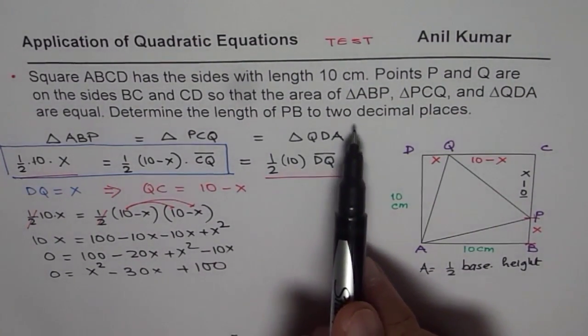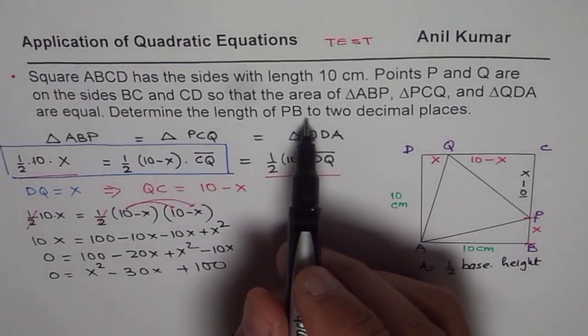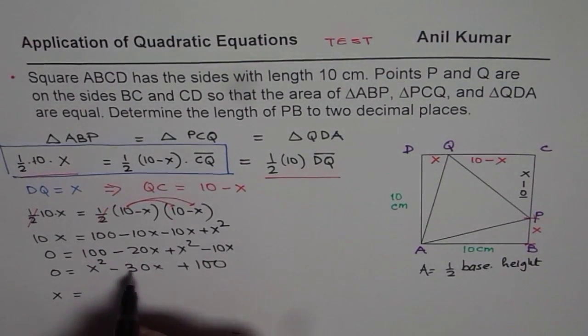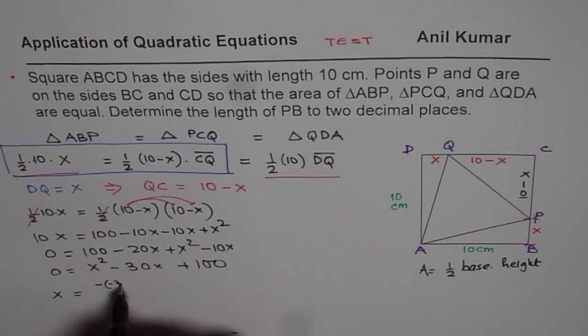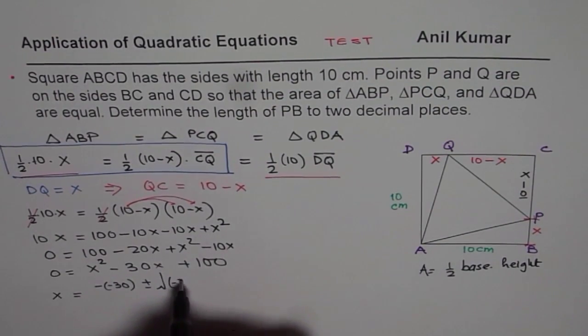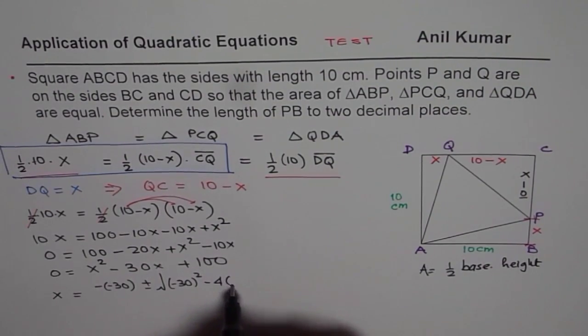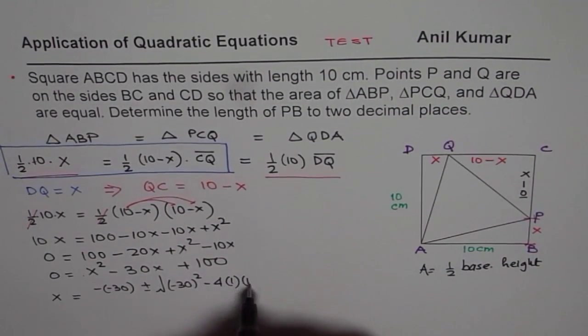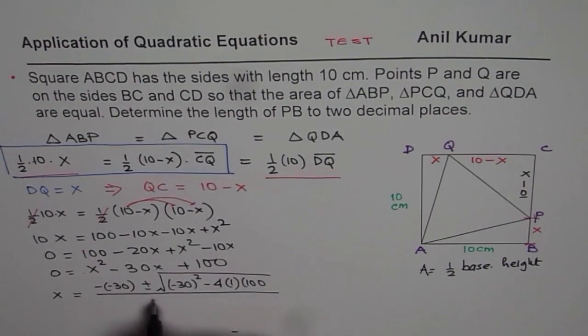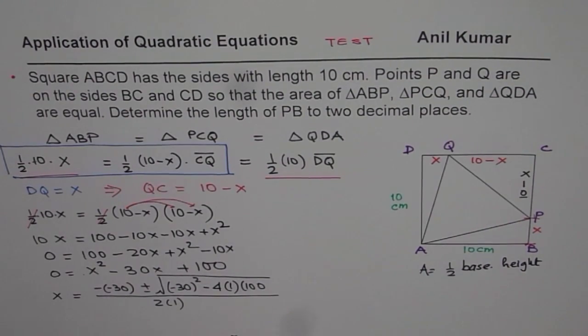You need to find it to two decimal places. So it is better to apply the quadratic formula. So the quadratic formula is X equals to minus of B, that means minus of minus 30, plus minus square root of B squared, that means minus 30 squared, minus 4AC. A is 1, C is 100, divided by 2 times A, A is 1.